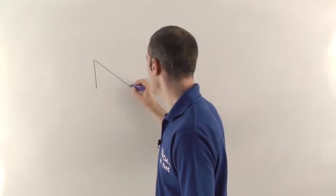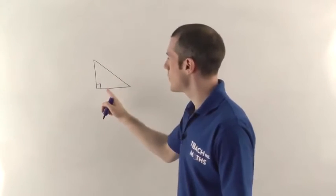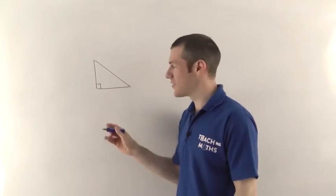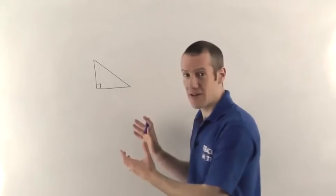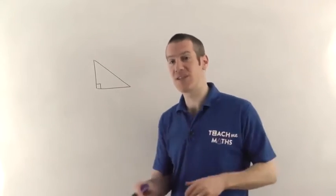So if I draw one for you here, so there's our right angle. This has to have a 90 degree angle in or it's not a right angle triangle and Pythagoras' Theorem only works for right angle triangles. It's the first thing you need to be aware of.